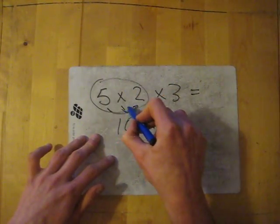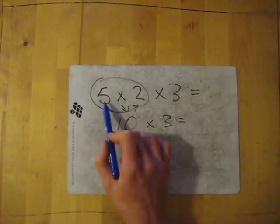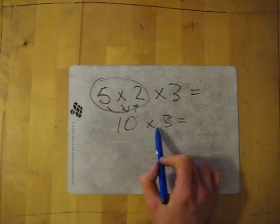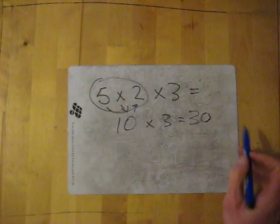So you've done the first two and sort of put them together, which gives you this answer, and then multiply that answer by the last number. Simple. This one: 5 times 2 is 10, and then 10 times 3 gives me 30, as we all know.